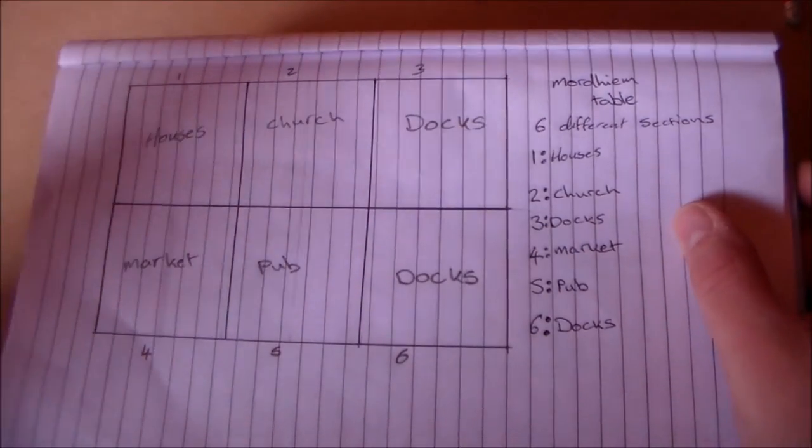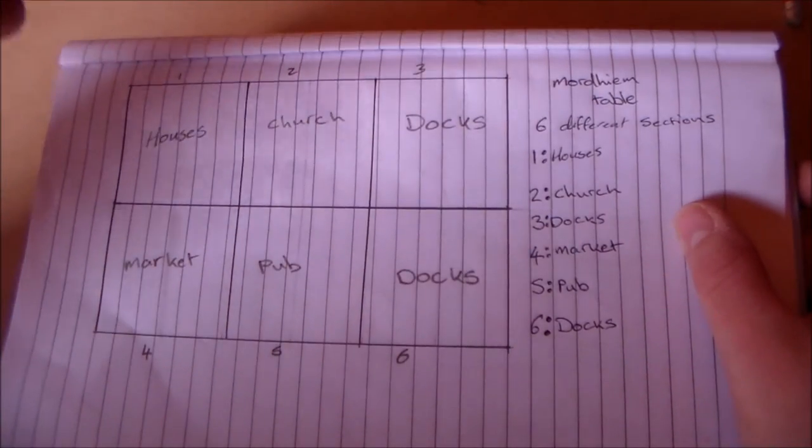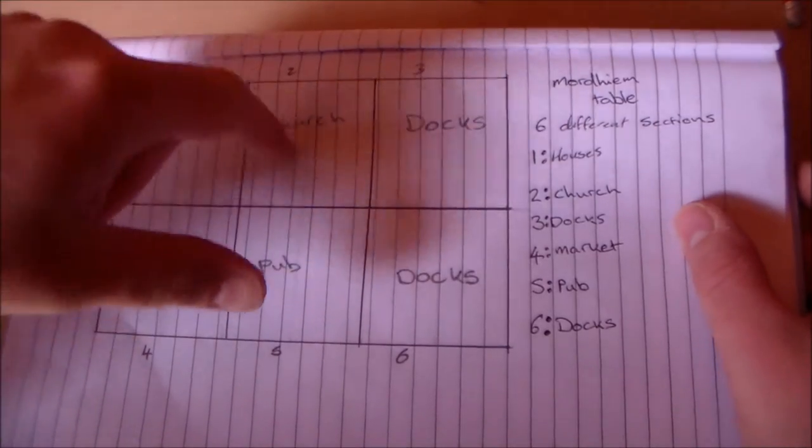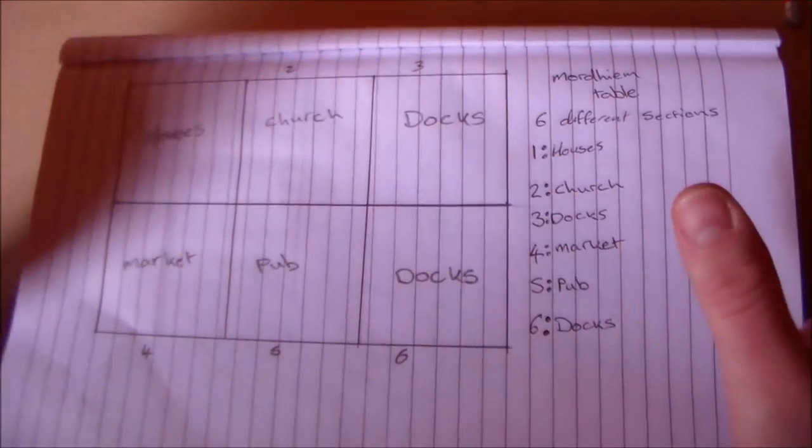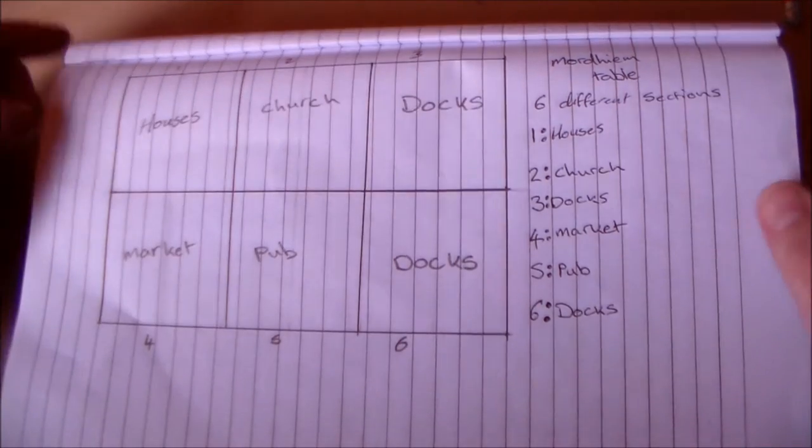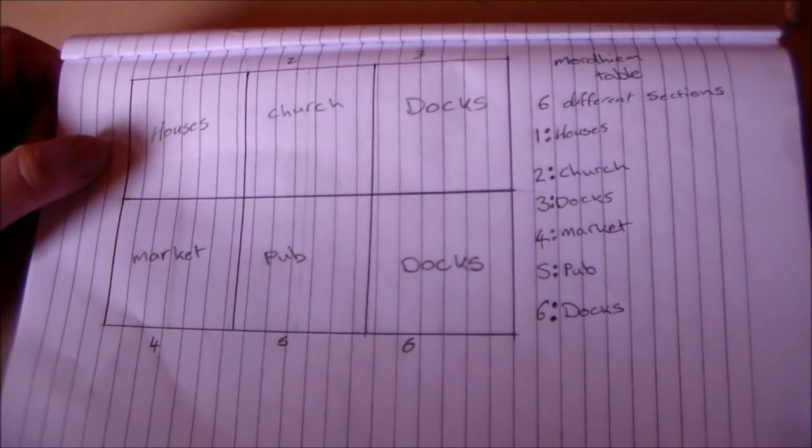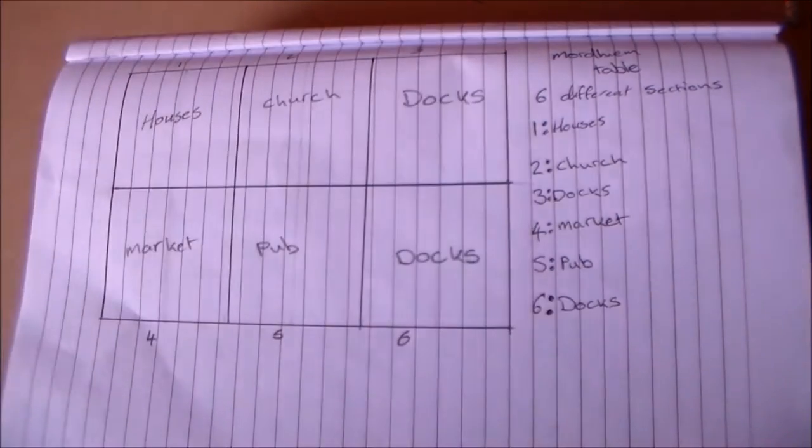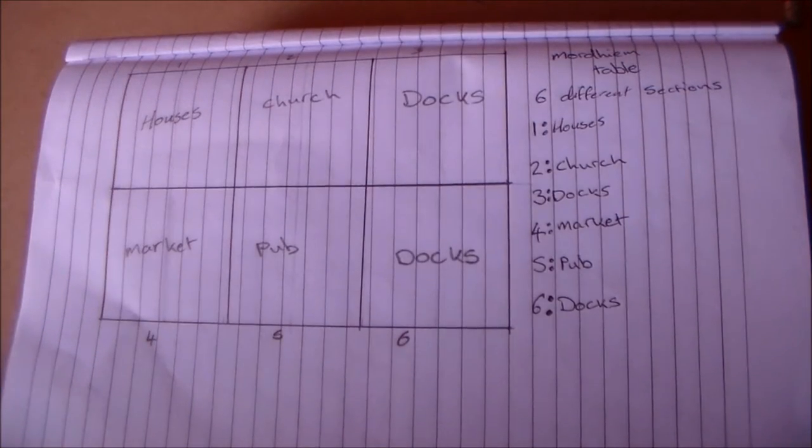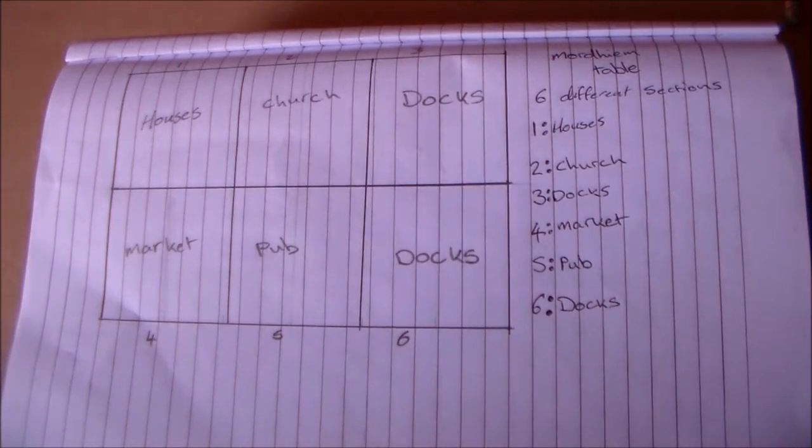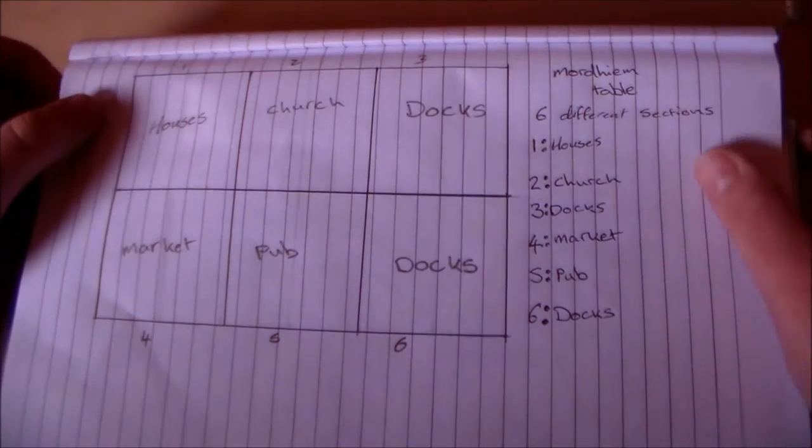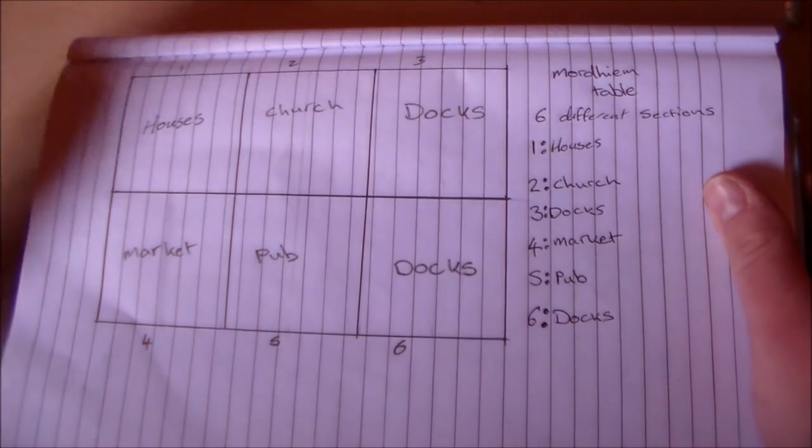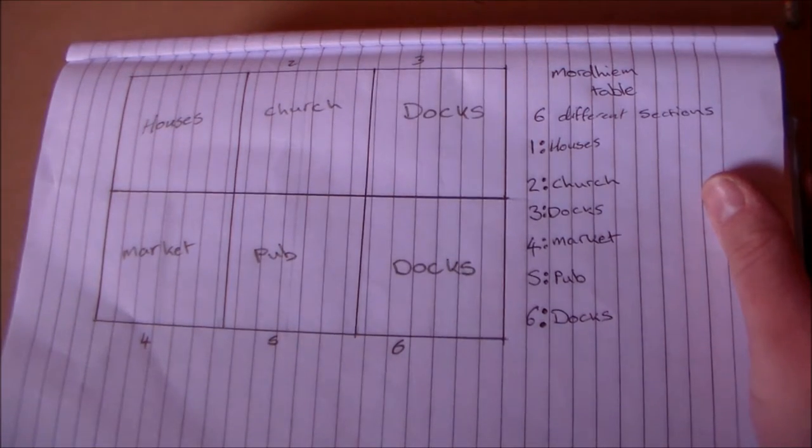So, as you can see, I've divided up the table into 6 different sections just to break it up and figure out what parts I want to go where. I want it to be a fantasy kind of themed table, especially towards Mordheim because that's something that I'm starting to get into now.